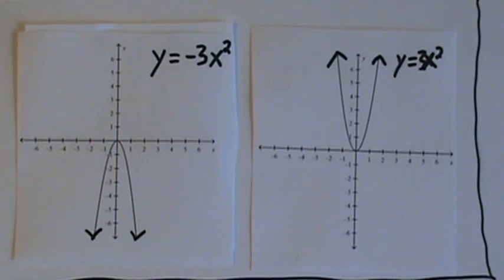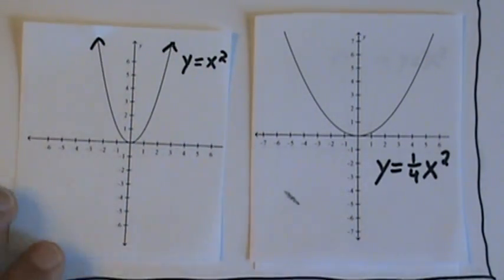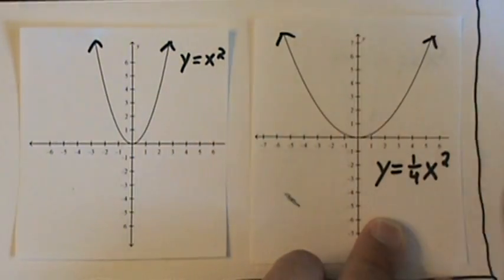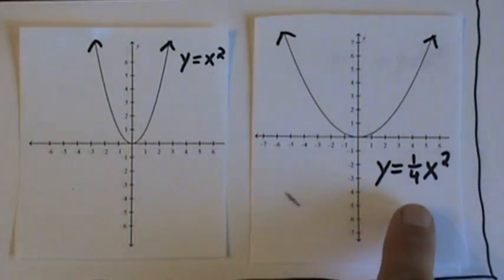Finally, let's look at the graph of y equals one quarter x squared. And we'll compare it to our first graph. Notice that both are pointing up, but this one is much wider.